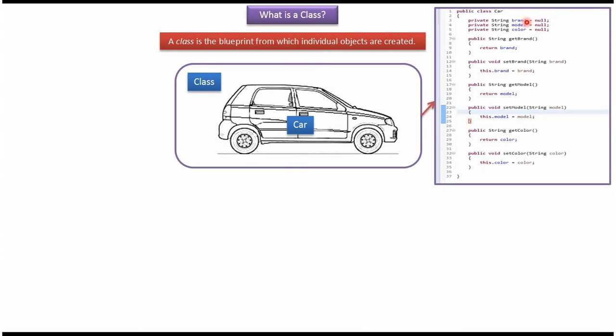It has three attributes: brand, model, and color. And I have defined getter and setter methods for brand, model, and color.